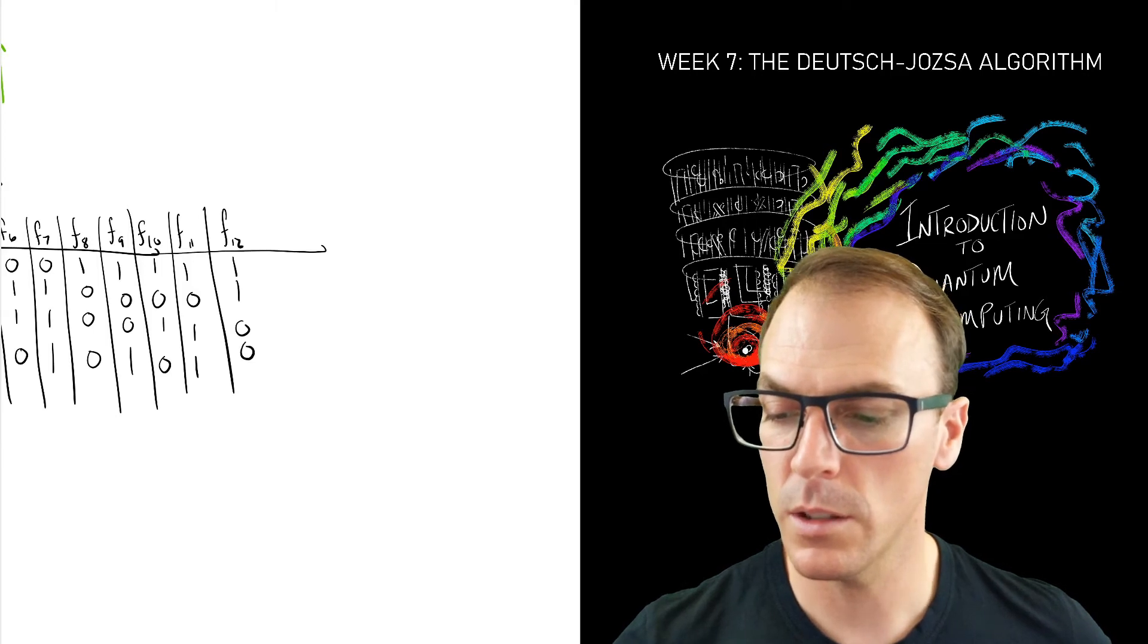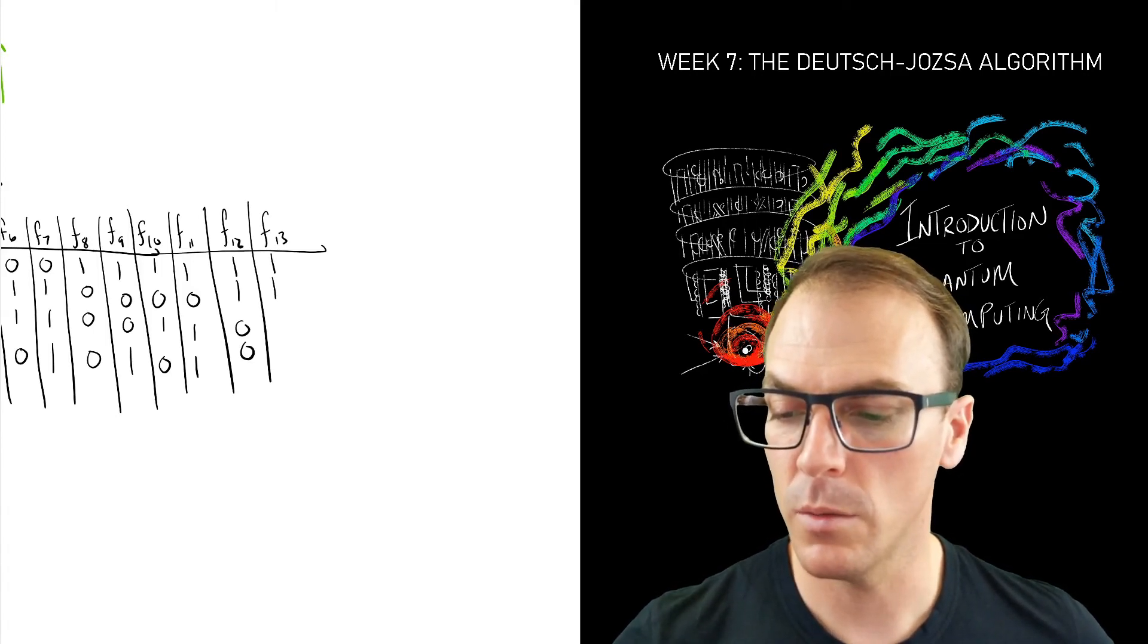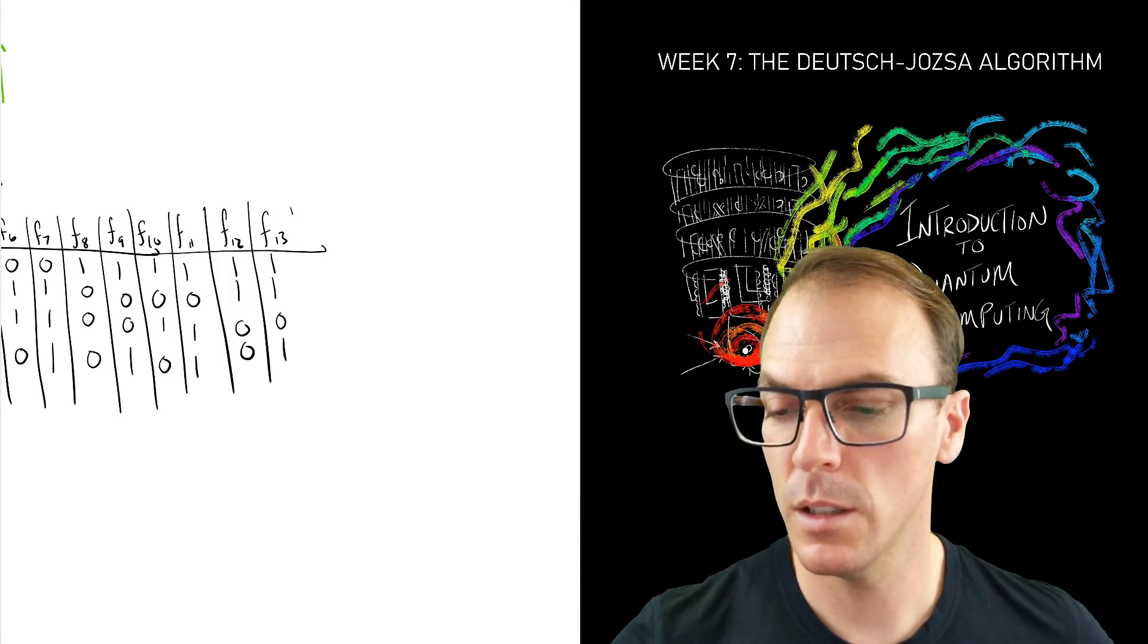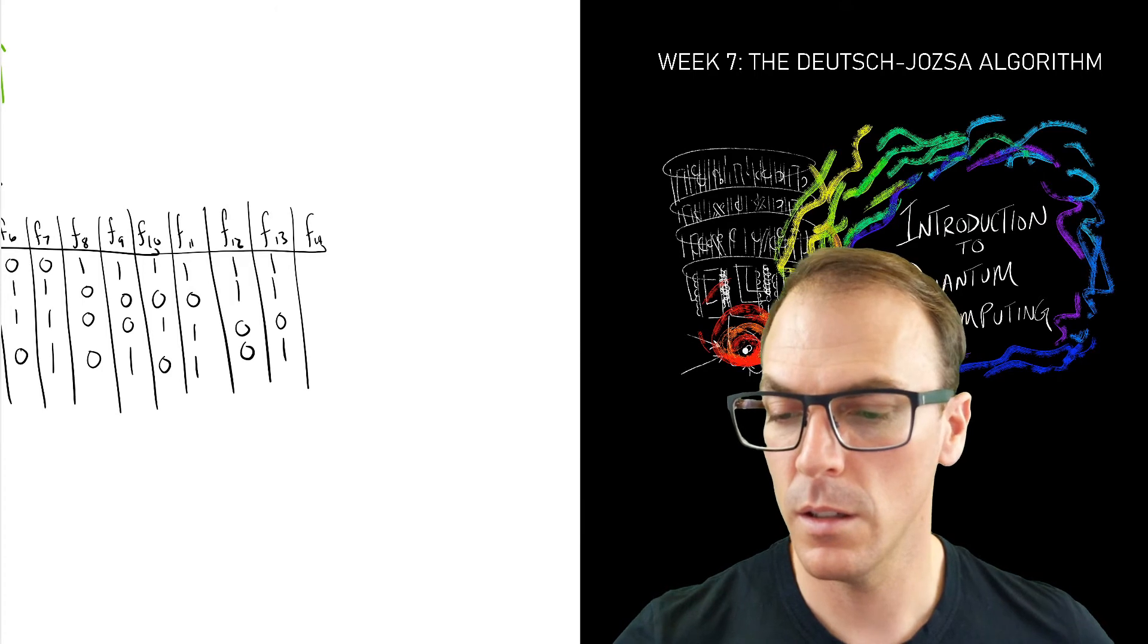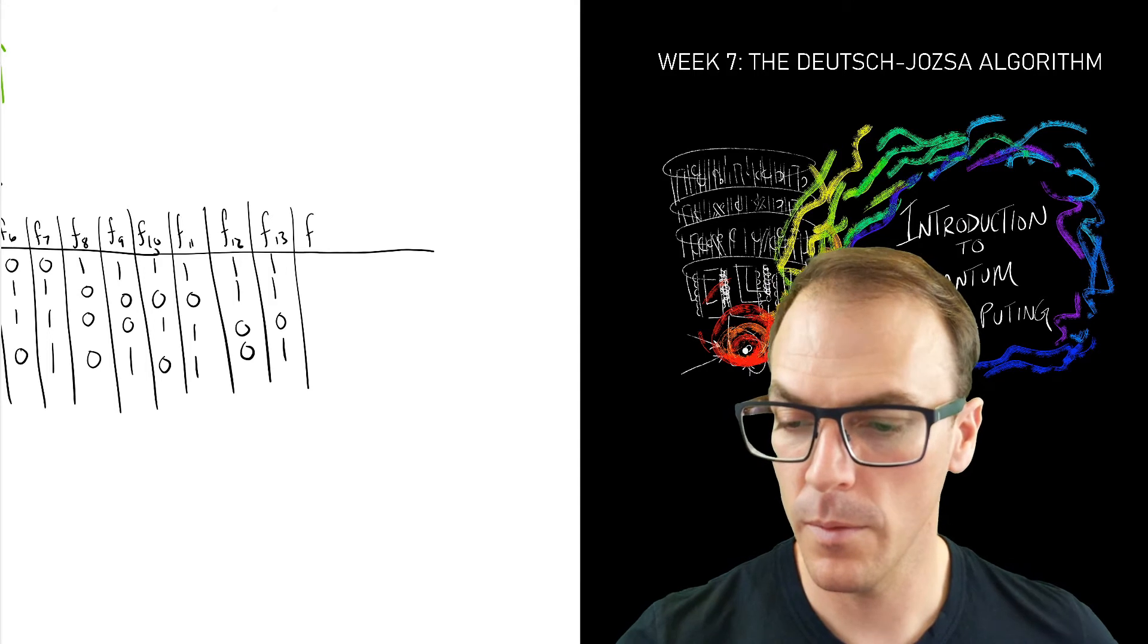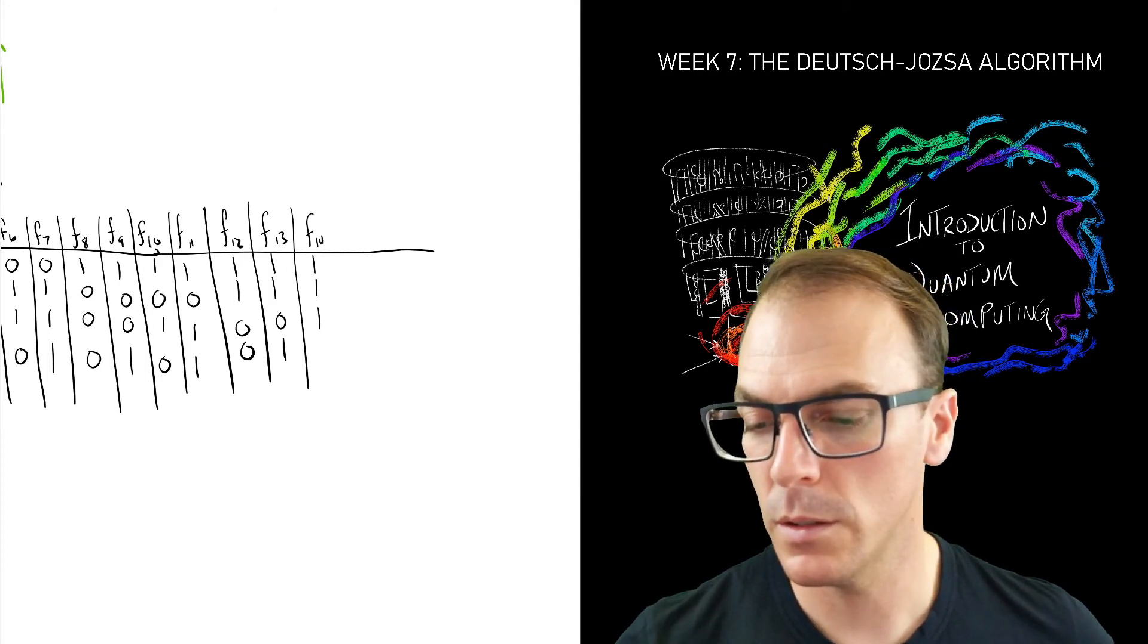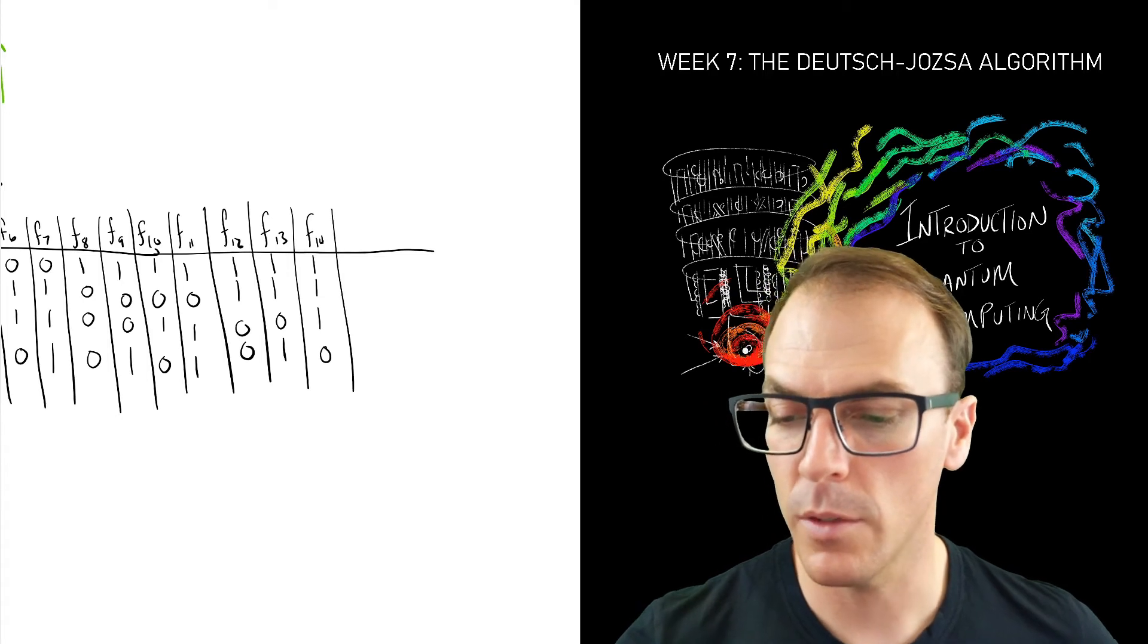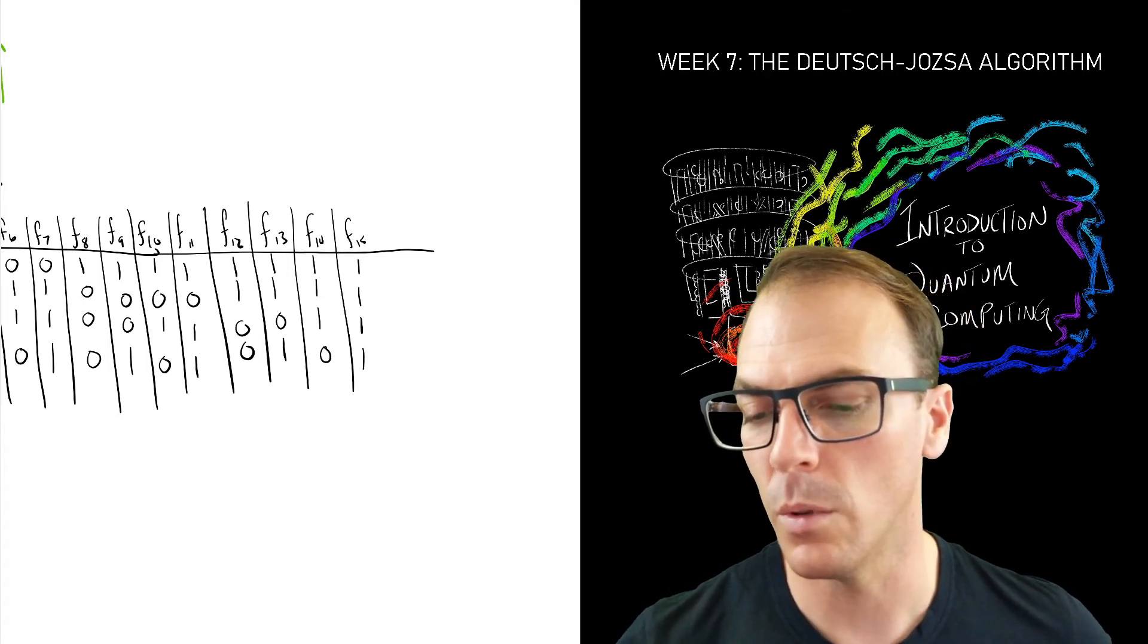[Completes enumeration of f13, f14, and f15 with their binary values]. Finally, F15, one, one, one, one. Phew. Okay. Here they all are. All 16 possible two-bit functions.